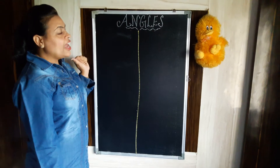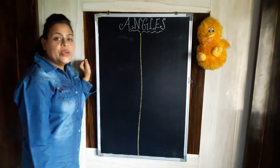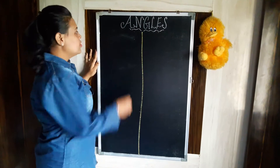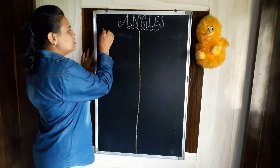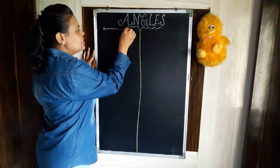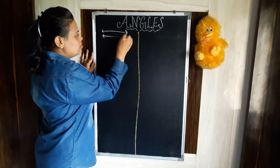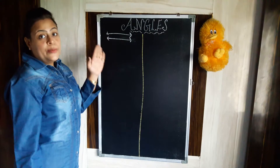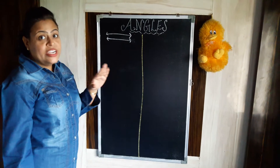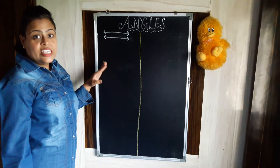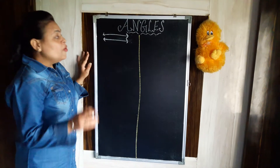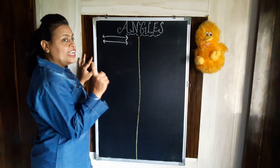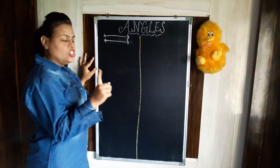Today's topic is angles. Basically, we need two lines to form an angle. But suppose there are two lines that are parallel to each other — they never intersect each other. If we want an angle, we need lines that intersect each other.